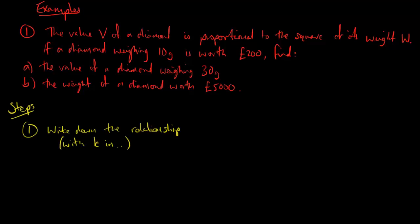Now the steps for this are just like they were for direct proportion. So first of all write the relationship. In this case v is proportional to the square of w. So the first part v is proportional to that's exactly the same. So v equals k. In this case it's times w squared because it's proportional to the square of w. So that's my relationship.